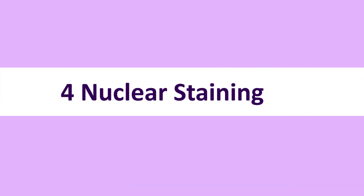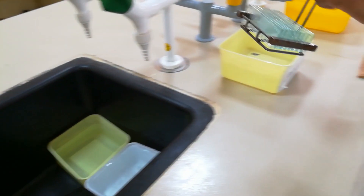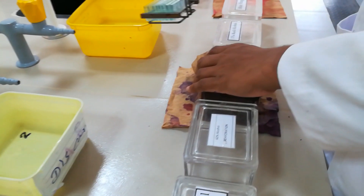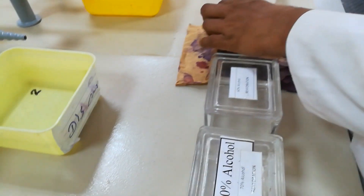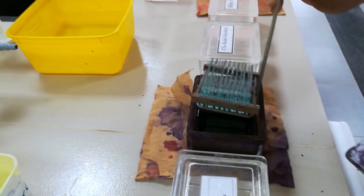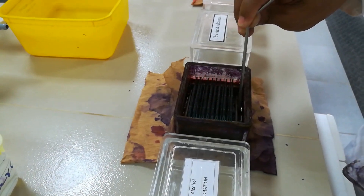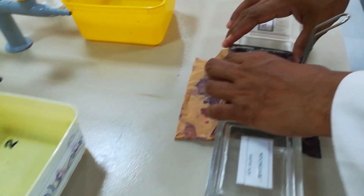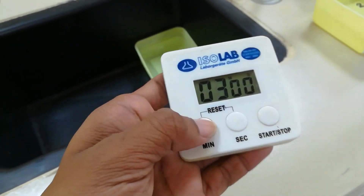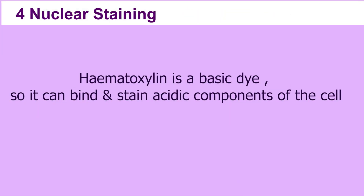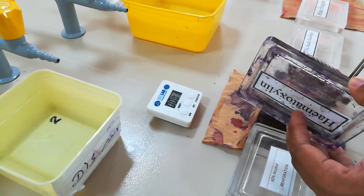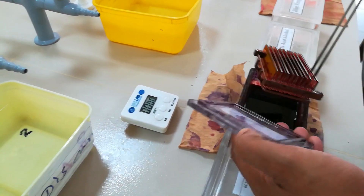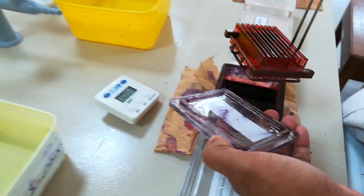Nuclear staining. Hematoxylin is used as the nuclear staining type. Dip the slide in filtered Hematoxylin solution for 10 minutes so it can bind and stain acidic components of the cell.